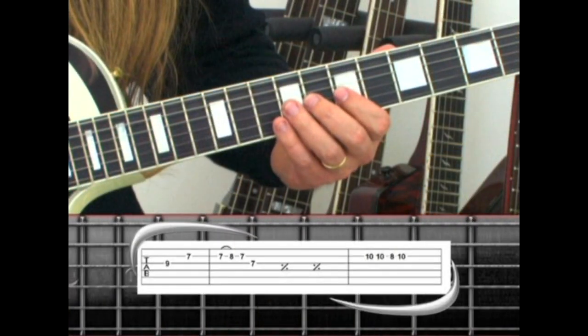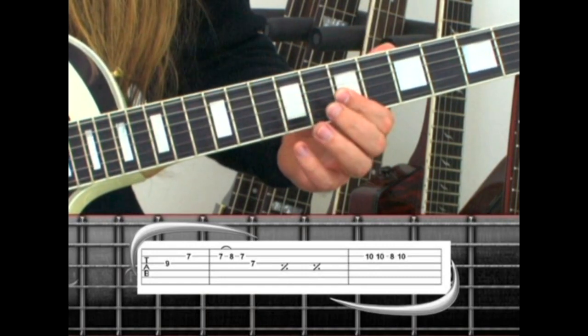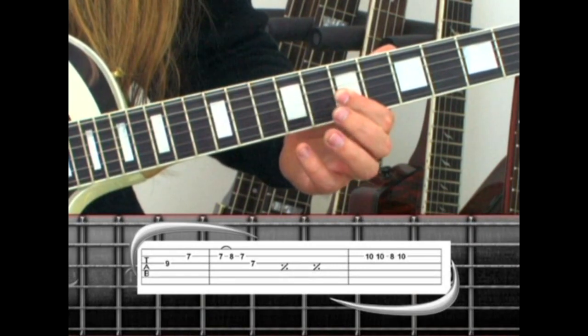Phrase 21 starts where we left off on the ninth fret, to the second string, seventh fret. Next we pick seven, hammer to eight, back to seven, back to the third string, seventh fret.